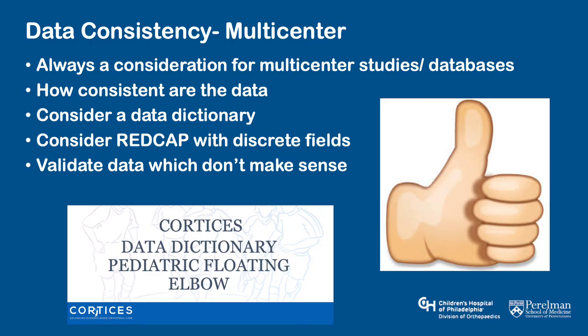Data consistency is critically important, particularly in multicenter studies. Data dictionaries are incredibly useful: smart people can interpret or request a data point differently, so no room for ambiguity can be allowed. The data dictionary should include units of the variable, technique of measurement, when data should be measured, and even significant digits. A well-designed data dictionary will save scores of back-end hours trying to clean the data. Discrete fields are more helpful than free text fields, and always validate data which don't make sense.